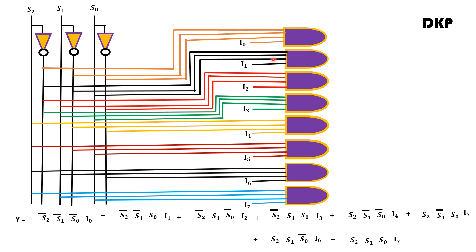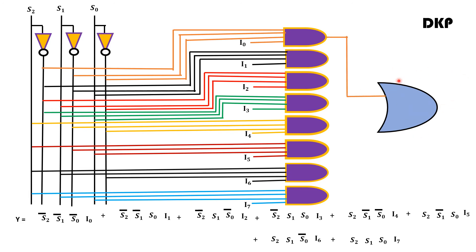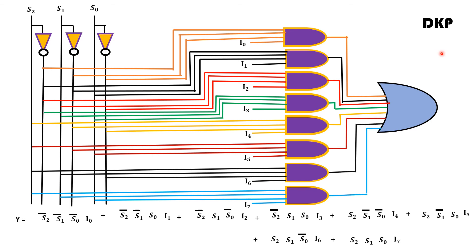Now we have to connect the outputs from these AND gates to an OR gate, because this is sum of products form. Connect the output from each of the 8 AND gates to an OR gate, and we get the output Y from this. So this is the logic diagram of your 8-to-1 multiplexer.